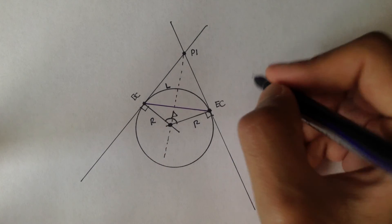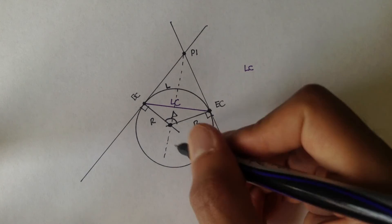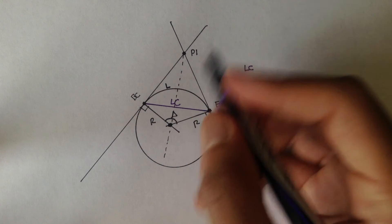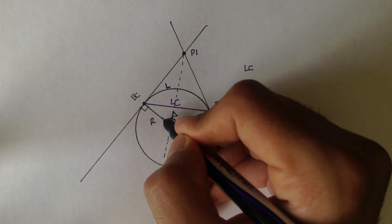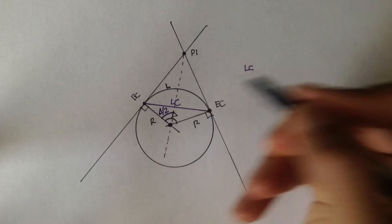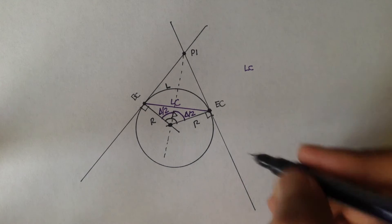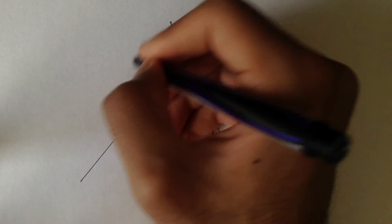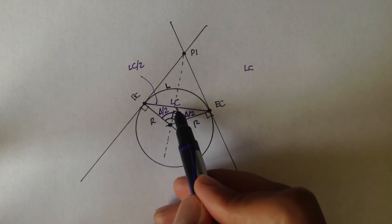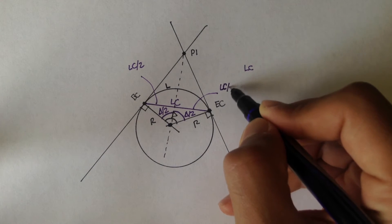This purple line is the long chord — the straight distance from BC to EC. Through geometry, if we draw a line from PI to the center of the circle, this angle is delta over 2, and this angle is also delta over 2. That means the long chord is divided into two equal parts: LC over 2 on each side, because of symmetry.